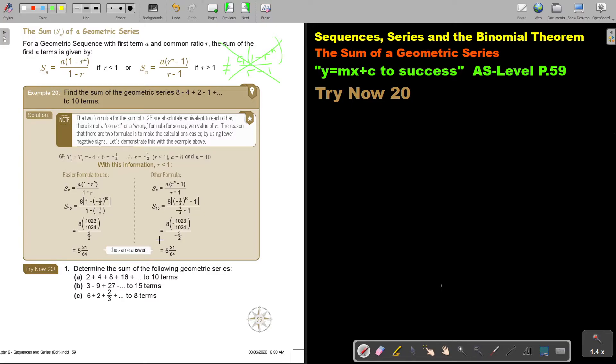Just keep that in mind. I want you to stop the video, and I want you to do number 1, C. Again, you can continue the video as soon as you are finished. Let's start. 1, C. So, 6 plus 2 plus 2 over 3 plus 2 over 3, and it's to 8 terms.